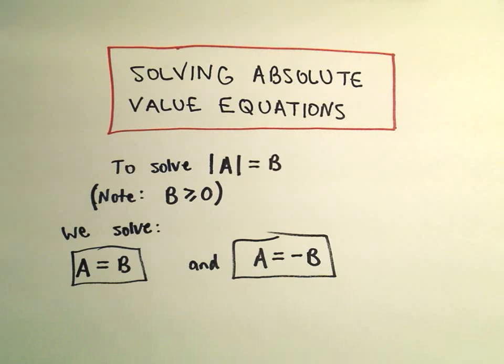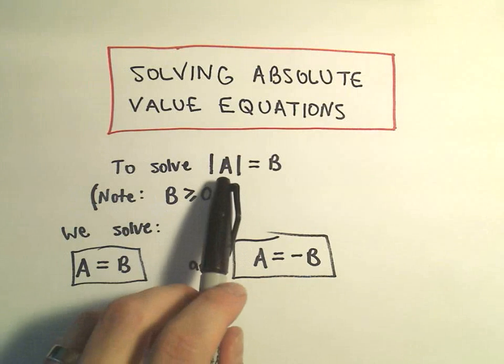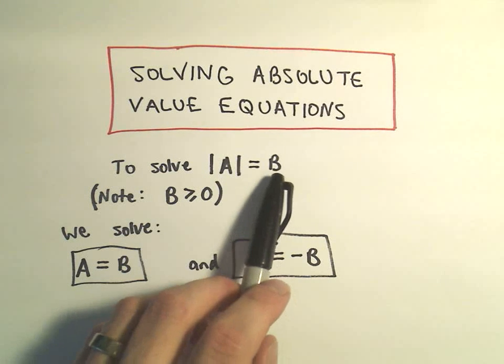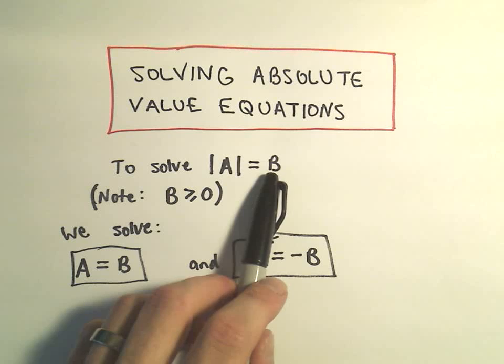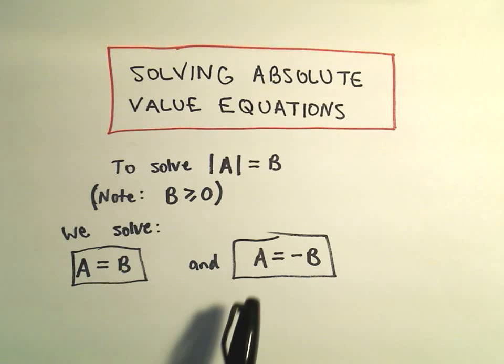Alright, in this video I want to do another example of solving an absolute value equation. Again, the basic idea is if you have the absolute value of a equals b, so long as b is greater than or equal to zero, we solve the two equations a equals b and also a equals negative b.